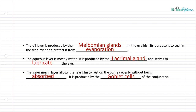The inner mucin layer allows the tear film to rest on the cornea evenly without being absorbed, and it's produced by the goblet cells of the conjunctiva. Think about the different structures here — the conjunctiva acts like a safety net, and the eyelids have multiple purposes including protection and spreading tears. The meibomian glands are extremely important for tears, and eye doctors always look at them to make sure they're functioning properly. Because the aqueous layer is very much water, it can easily be absorbed through tissue. That mucus layer allows it to sit on top and be evenly distributed across the cornea and conjunctiva without being easily absorbed.